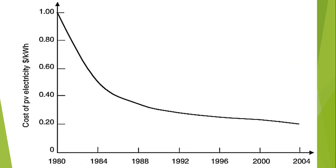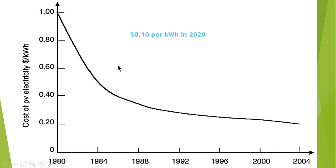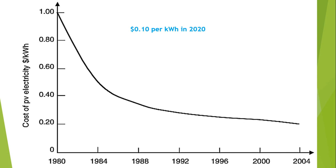This graph shows the cost of photovoltaic electricity in dollars per kilowatt-hour from 1980 to 2004 onwards. The cost of photovoltaic electricity has been significantly reduced. It has been reported that in the year 2020 it is around $0.10 per kilowatt-hour.